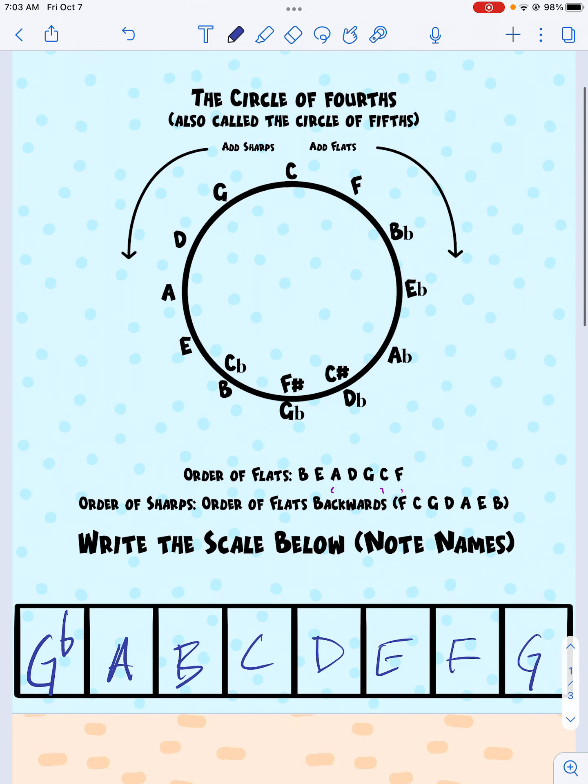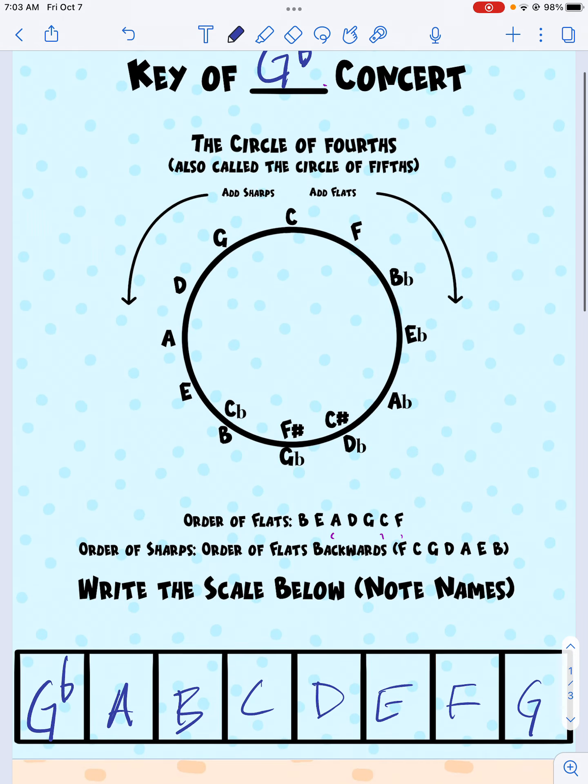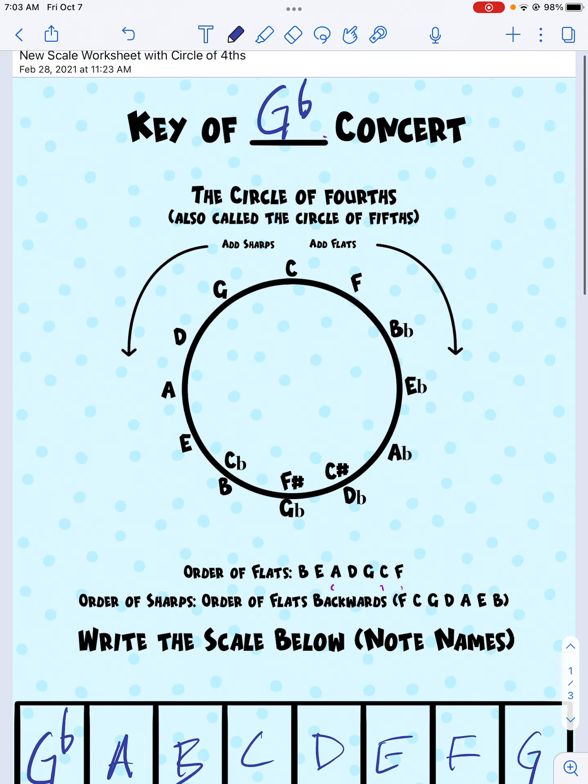Now we've got to figure out how many flats or sharps we're talking. So we go back up here to the circle of fourths. We figure out right at the top here, this is zero flats, zero sharps at the top of the circle. And then you can see this right here says add flats as we go this direction. So here we go. This would be one flat, two flats, three flats, four flats, five flats, six flats.